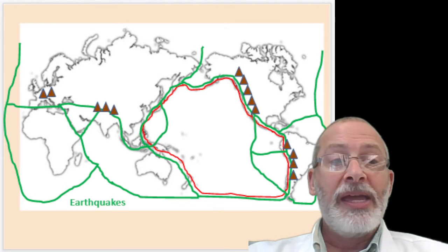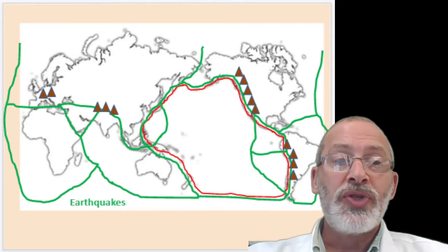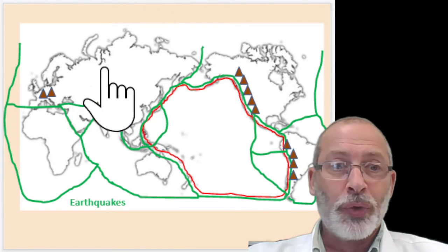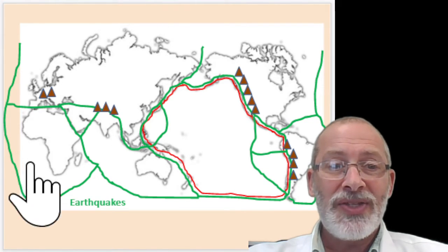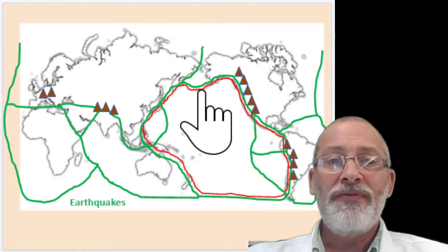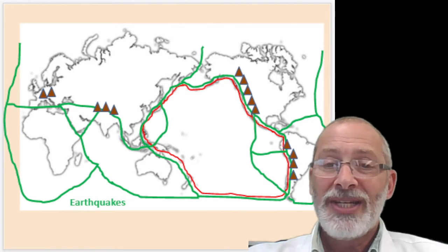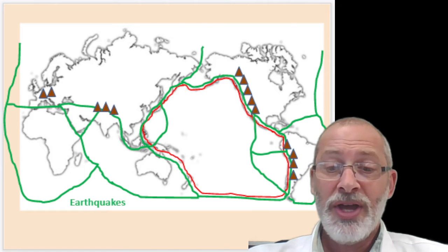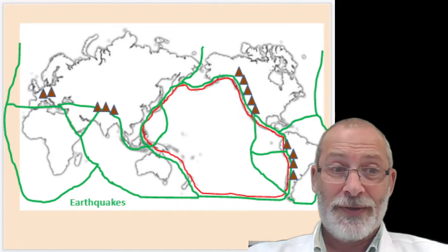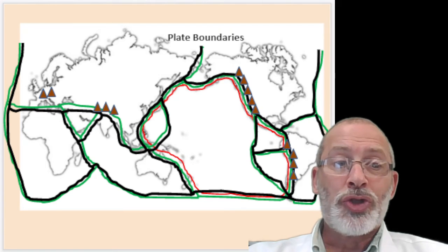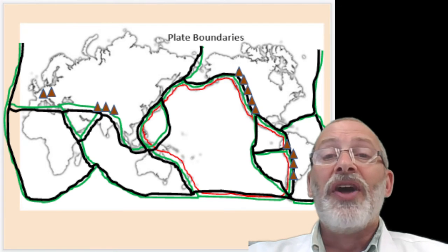After that, you're going to draw the boundary zones where major earthquakes happen. These green lines here are areas where most of the world's earthquakes take place, so you're going to color code the lines for earthquakes.